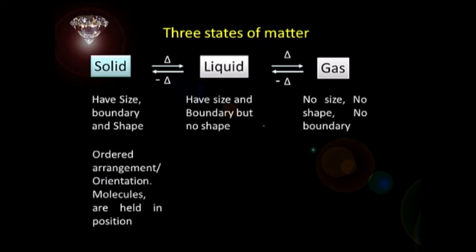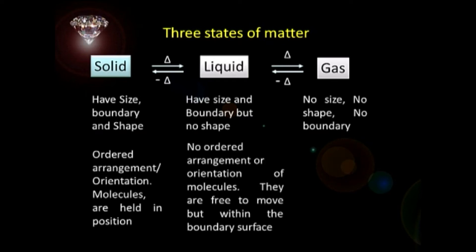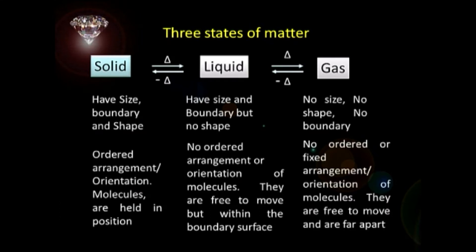Solids have an ordered arrangement of molecules — they are held in position, in touch with each other. Whereas in the case of liquids, there is no ordered arrangement of molecules, but they move within the bounding surface and take the shape of the vessel in which they are contained. In the case of gas, there is no order at all — totally random, they occupy the entire available space.